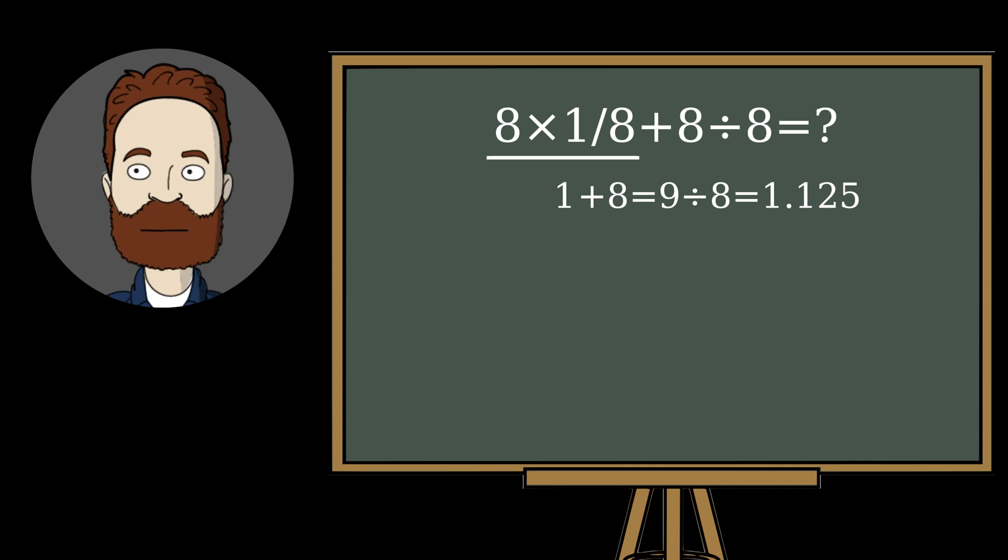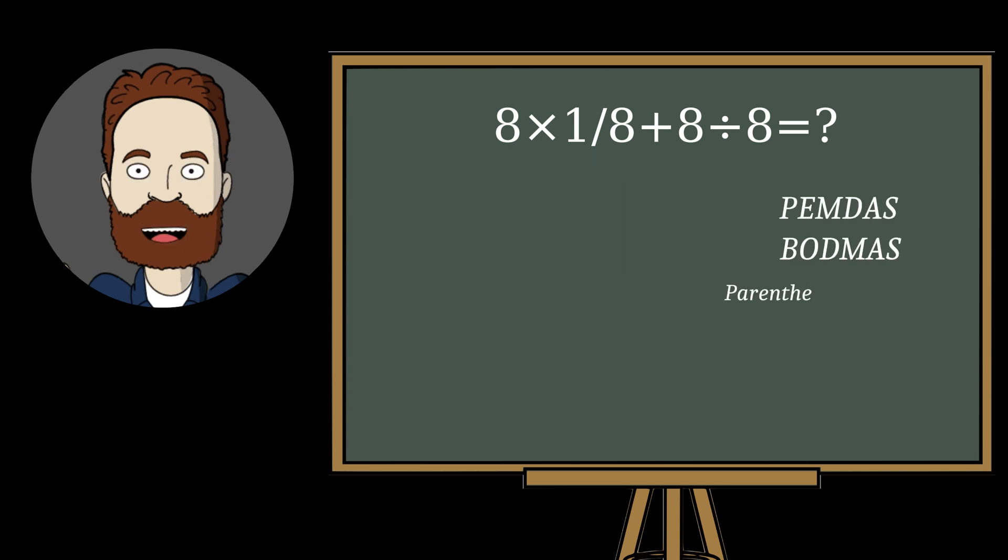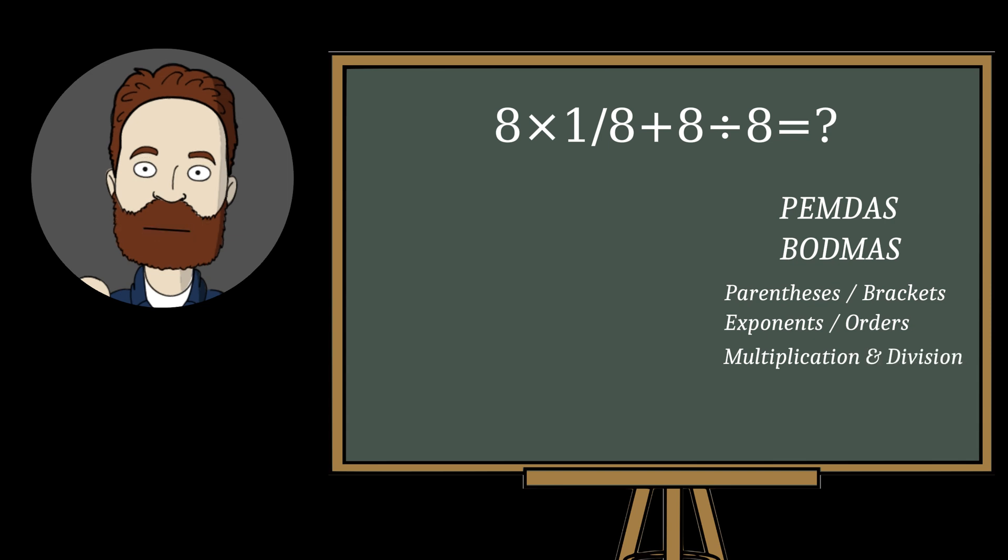And it's incorrect, because we violated the order of operations, which is always the same. Perform operations in parentheses, calculate exponents, perform any multiplication or division from left to right, perform any addition or subtraction from left to right.